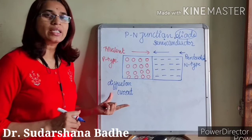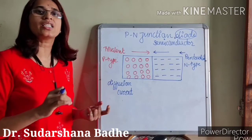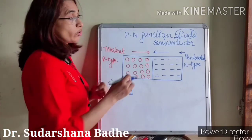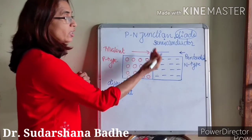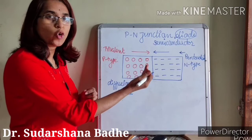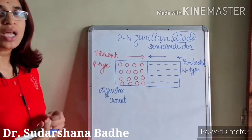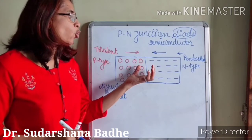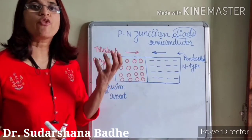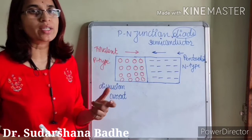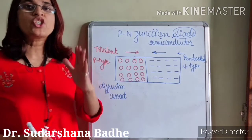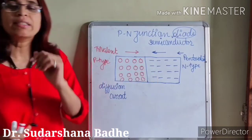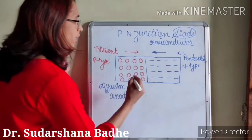This diffusion current is very small and lasts only for a short while. At the junction there is recombination of electrons and holes — they neutralize each other, and electrons and holes recombine to form positive ions and negative ions. There is a formation of a wall or layer of positive ions and negative ions at the junction. That layer is called the depletion layer.